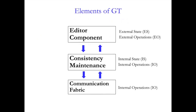The framework has three layers. The edited component, which has a state called external state, and users' actions that affect the state are called external operations. The consistency maintenance component, that has internal representation which we call internal state, with corresponding internal operations. And finally, the communication fabric that propagates the internal operations to remote sites.